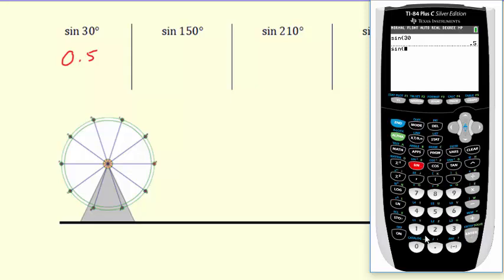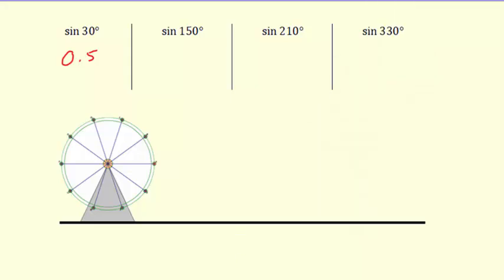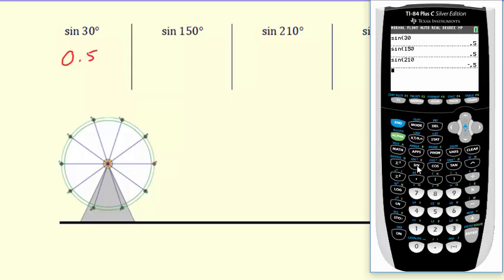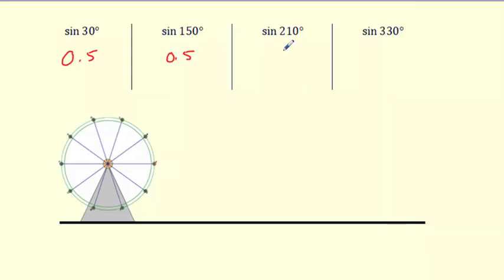So sine of 30 is 0.5. I want to compare that to the sine of 150 — look at that, it's also 0.5. What do you think the sine of 210 is? It's 0.5 but negative. And the sine of 330 — that's right, we get negative 0.5. So why do these all have the same value? That's what this whole section is about.